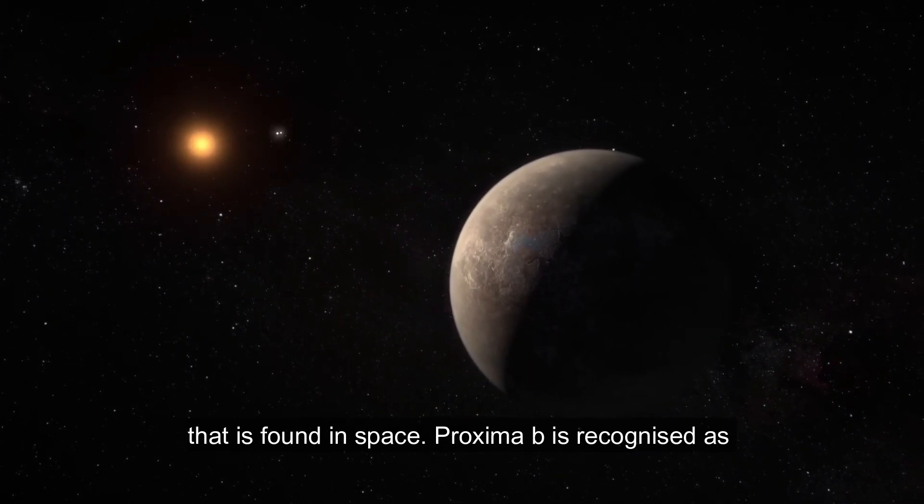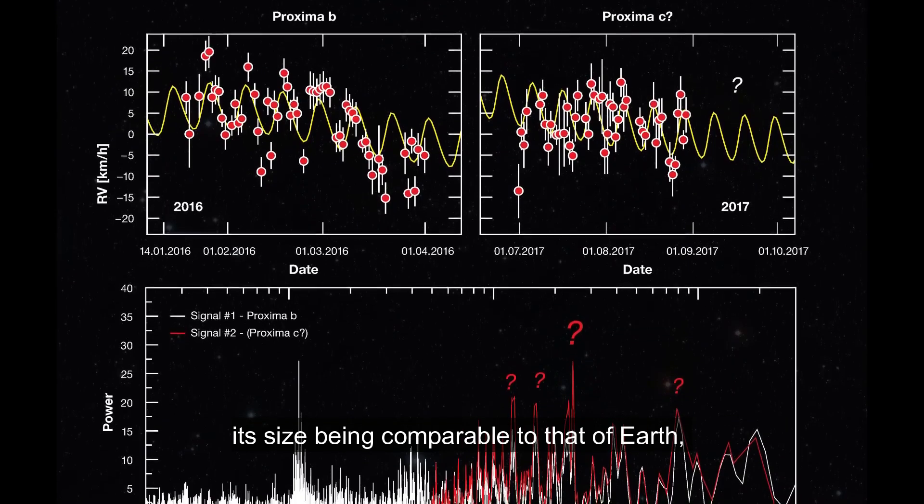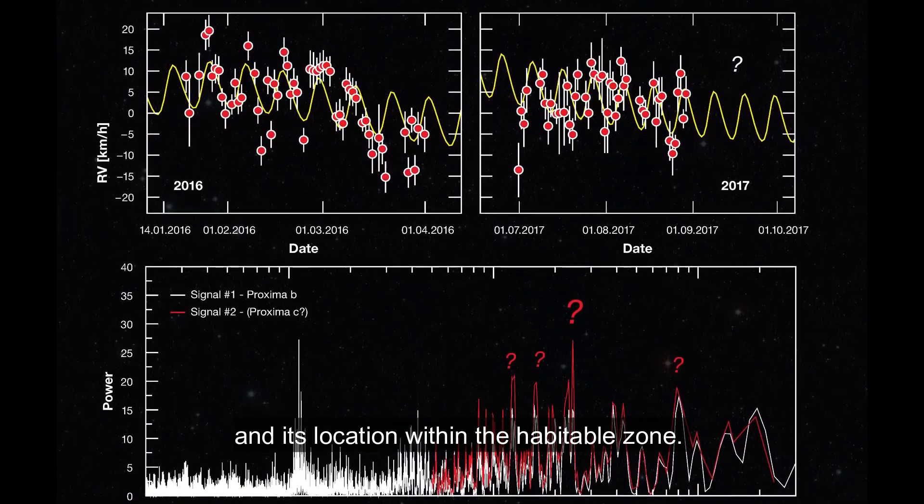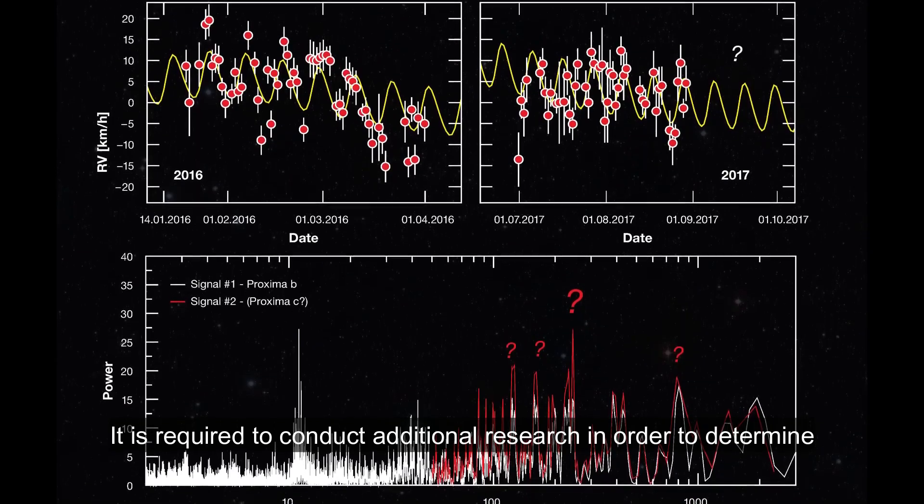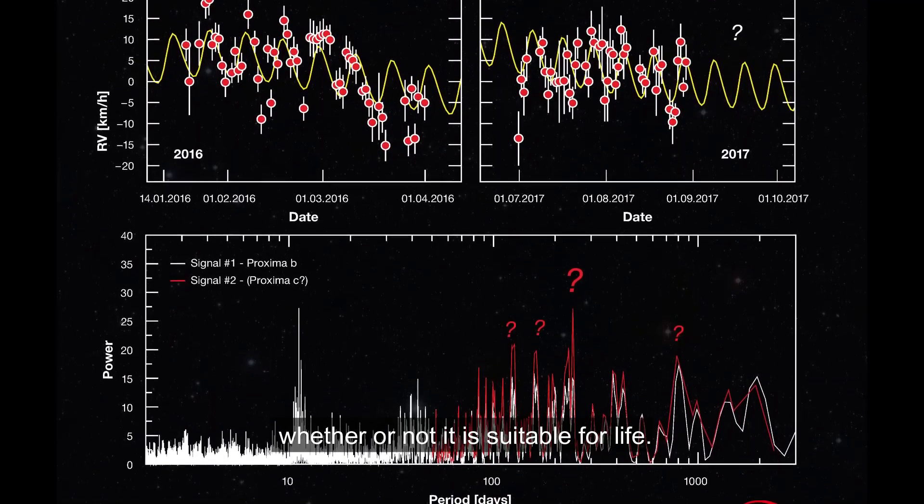Proxima B is recognized as a significant object due to its proximity to the solar system, its size being comparable to that of Earth, and its location within the habitable zone. It is required to conduct additional research in order to determine whether or not it is suitable for life.